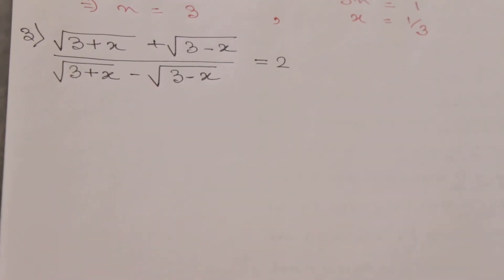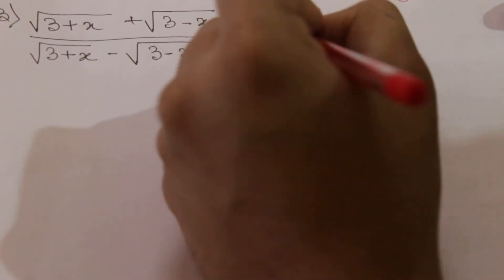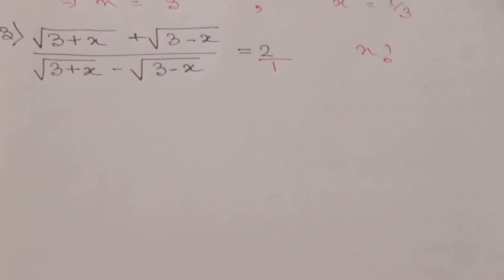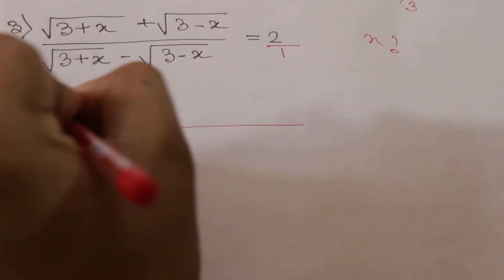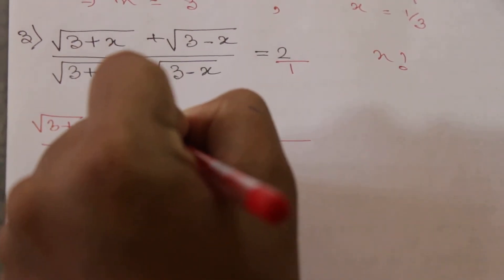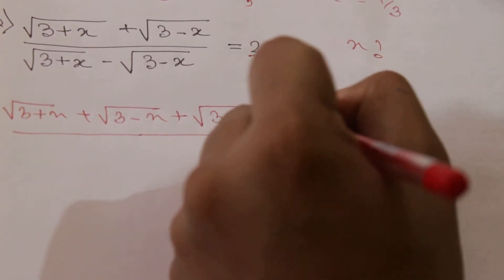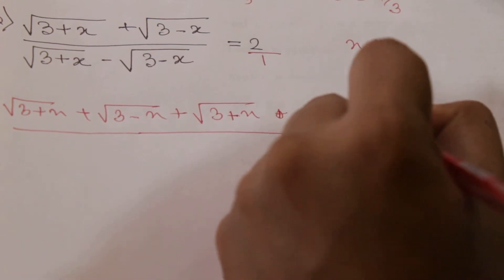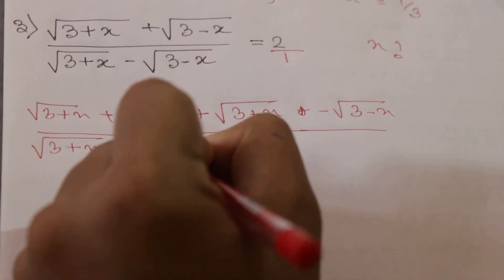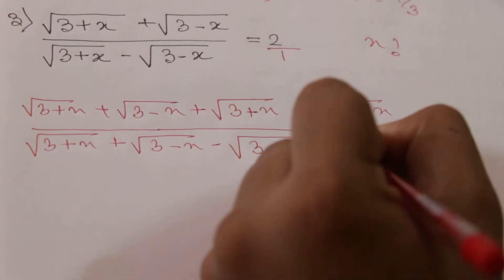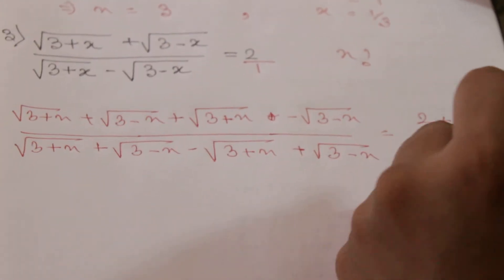From here we have to calculate the value of x. We can write 2 as 2/1, and then we will use componendo and dividendo, so the equation will become numerator plus denominator over numerator minus denominator, and from the right-hand side it will become accordingly.